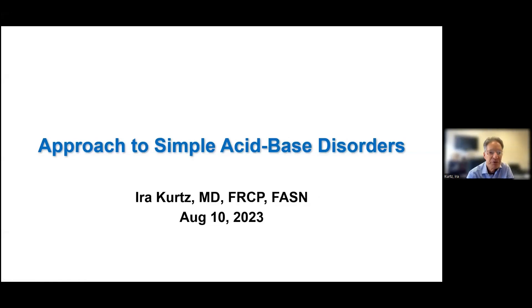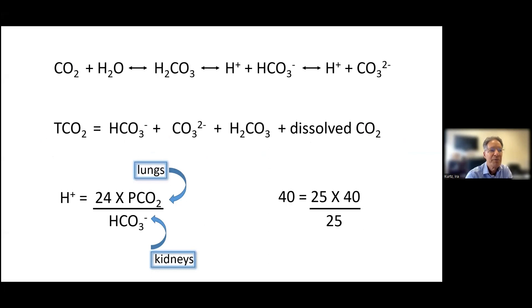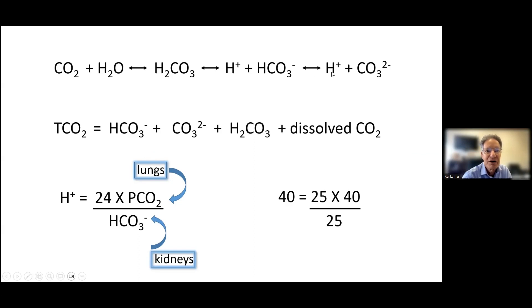Welcome everybody to this week's Lunch and Learn. We're going to continue our approach to acid-base disorders. Just to refresh your memories on terminology: the top line shows the carbonate species in blood and the equilibrium between them. There's carbon dioxide and water which form carbonic acid. The carbonic acid can break down into a proton and bicarbonate, and the bicarbonate can further break down into another proton and carbonate.